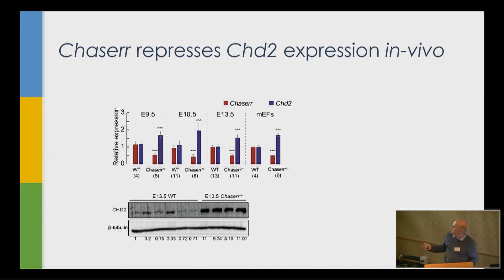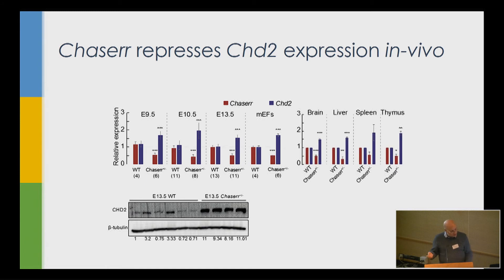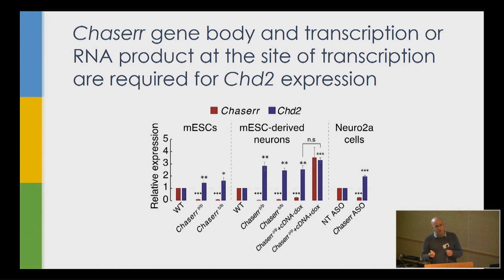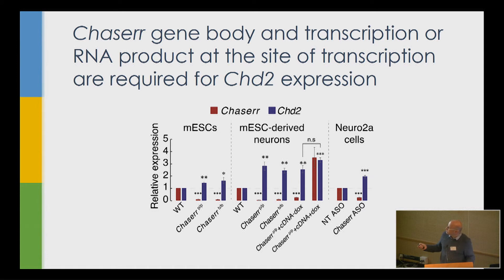We spent a lot of time trying to understand the discrepancy between RNA and protein levels, and we don't know what causes it. But in both embryonic and adult tissues, we always see an increase in CHD2 on the RNA level and always an increase in protein expression. To test whether this is really the function of the RNA or just promoter competition, we turned to mouse embryonic stem cells, where deletion of the promoter of Chaser leads to increased CHD2 expression. Deletion of the gene body of Chaser — not touching the promoter — confirmed by 4C analysis to not change chromatin contacts, still causes a similar increase in CHD2 levels.